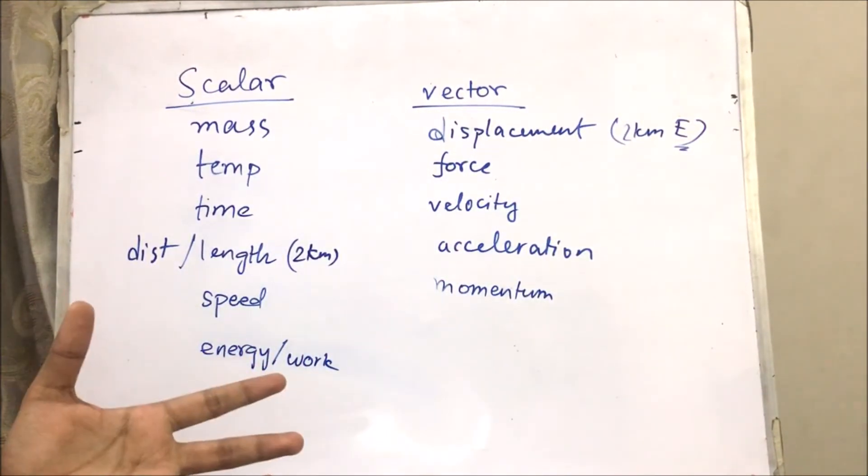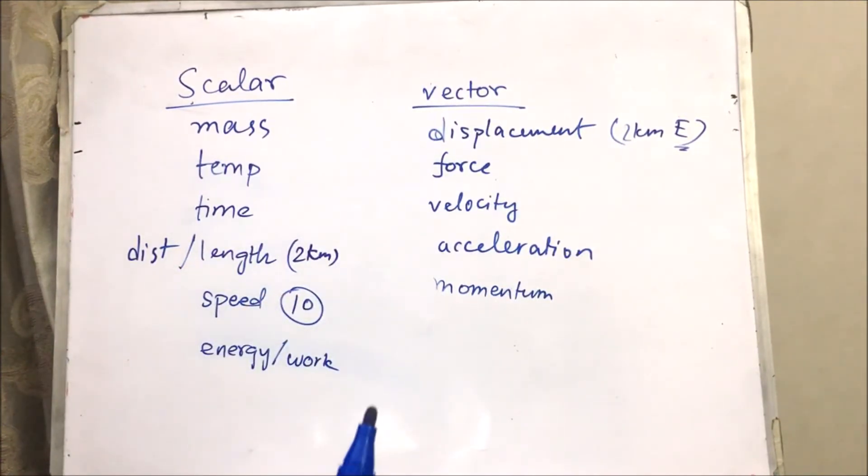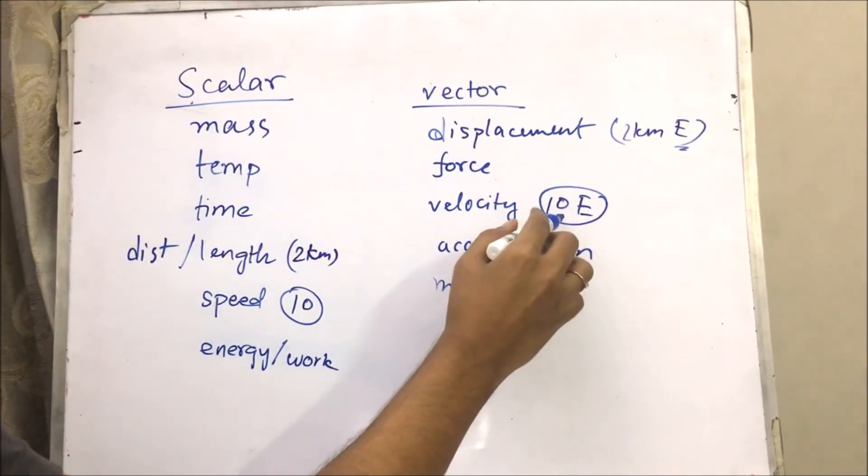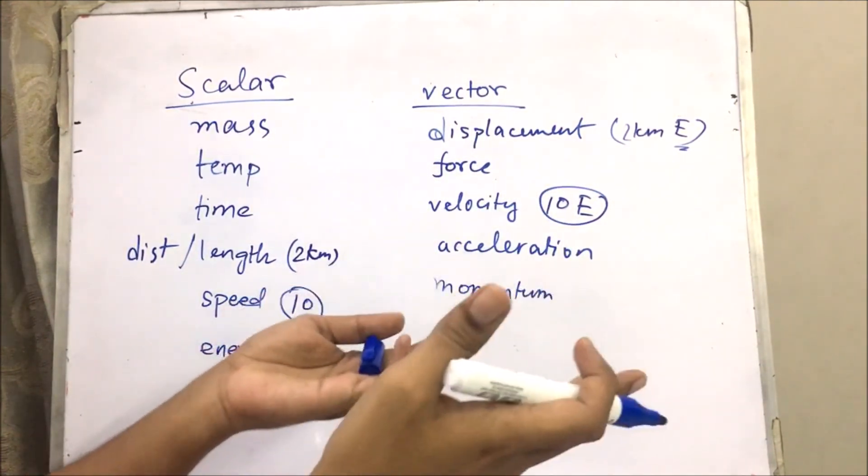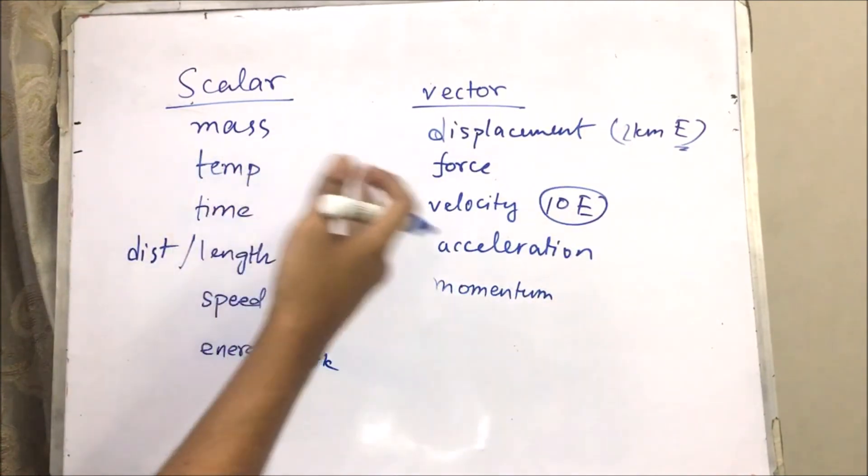Speed, how fast are you traveling? I'm traveling at 10 kilometers per hour. In which direction are you traveling? I'm traveling 10 kilometers per hour in the east direction. Or I'm traveling 10 kilometers per hour towards my school or towards my home. You add a direction. So, whenever you add a direction to speed, it becomes a velocity.